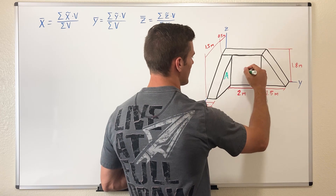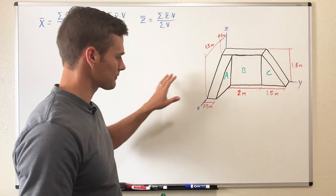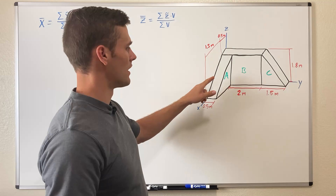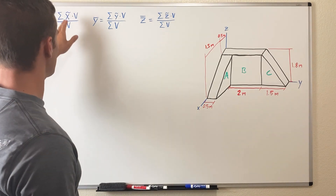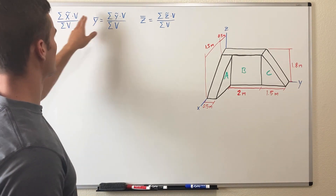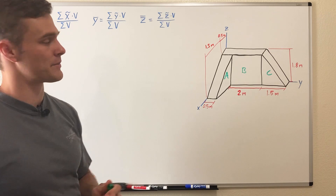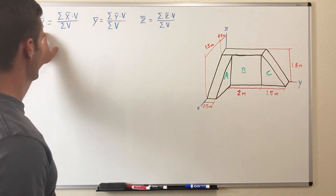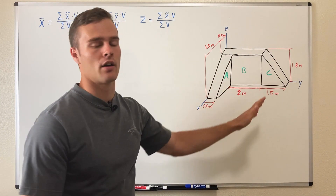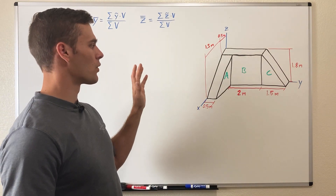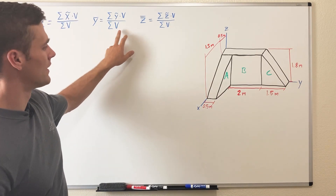Knowing that, we're going to label this block A, this one B, and this one C. From there we're going to find the coordinates of the centroid of A, B, and C. Those coordinates are x̃, ỹ, and z̃ — the x, y, and z tilde coordinates respectively for each individual centroid. Then x̄, ȳ, and z̄ are the x, y, and z coordinates of the centroid of the entire object. Finally, after we find the coordinates of each centroid we are going to find the volume V of each object.